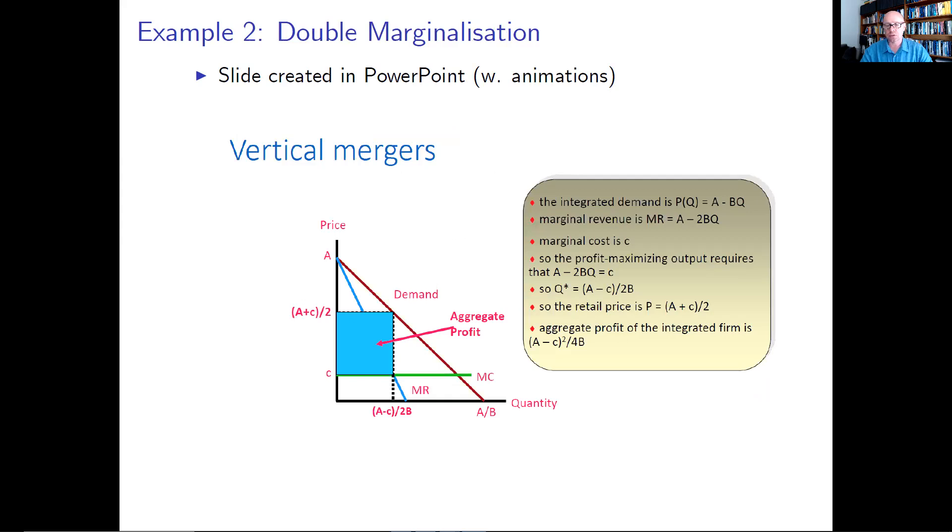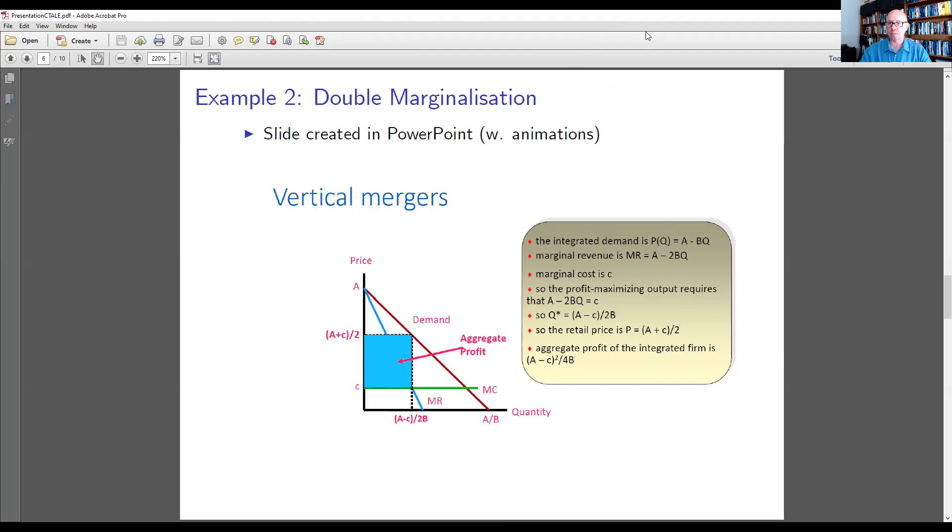Here we have another illustration of the typical graphs that people use in the field. In this case, it's vertical mergers. So this is the kind of materials that I used to use beforehand. So this is a good segue to switch and to look a little bit at the interactive graphs themselves. So I'm going to switch here.